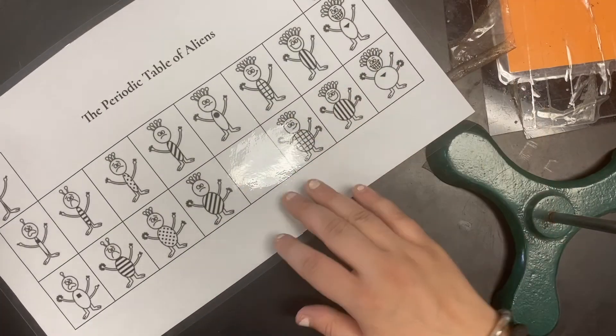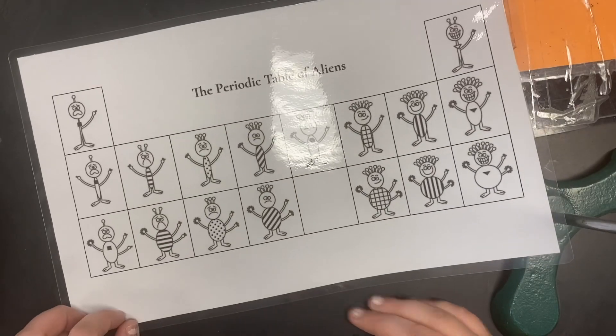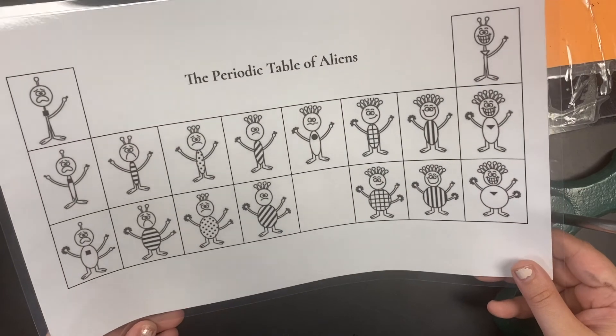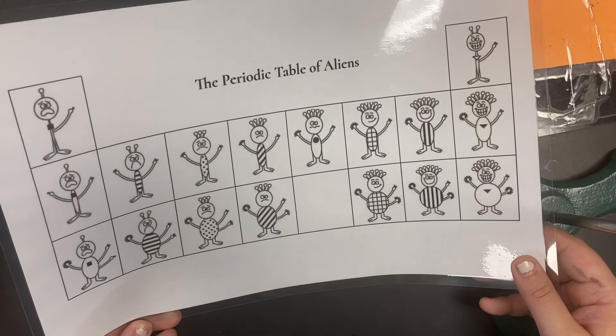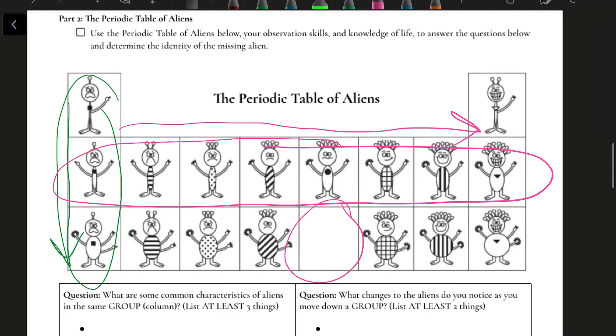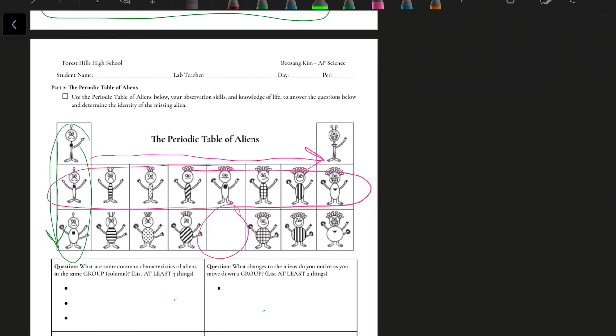When you get to part two, the periodic table of aliens, the picture is on your lab sheet. But this bigger version on your lab station makes it a bit easier to point out all of the tiny little details that you will see. Once you have drawn your little missing alien, that is pretty much it. Have fun.